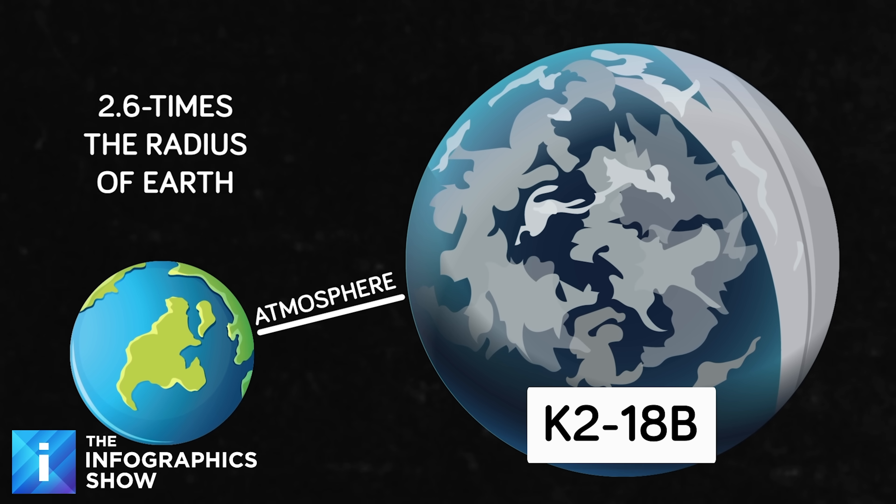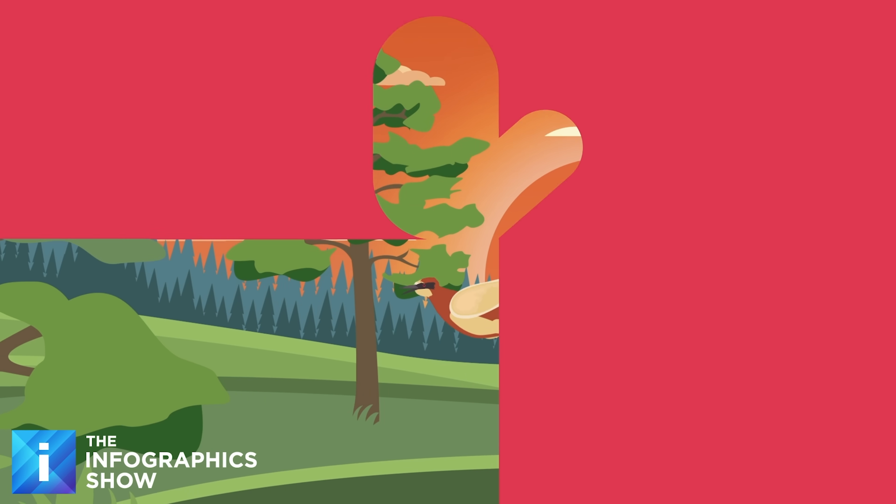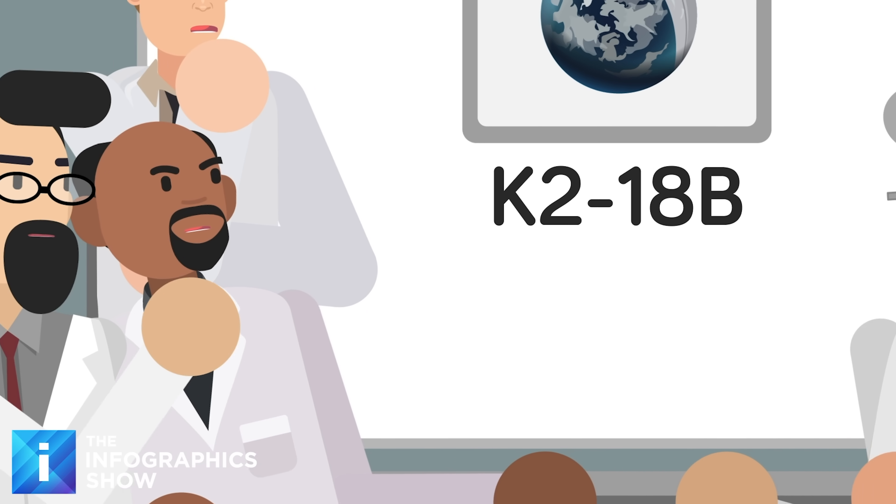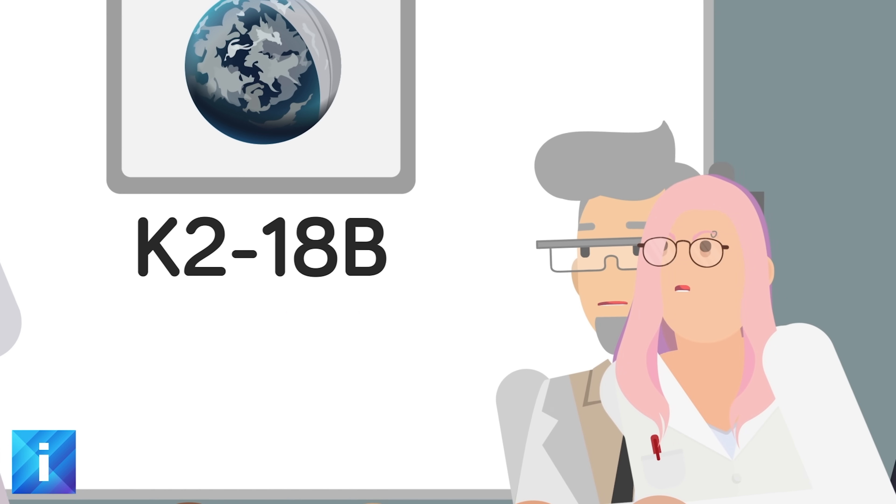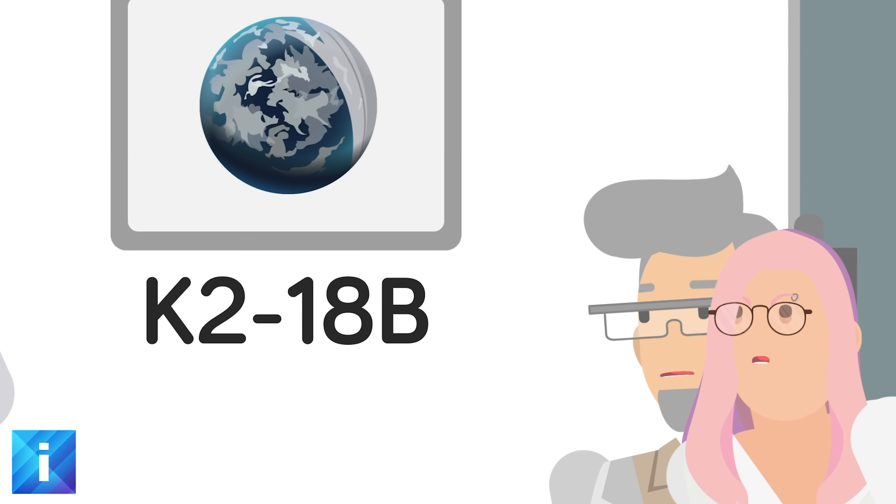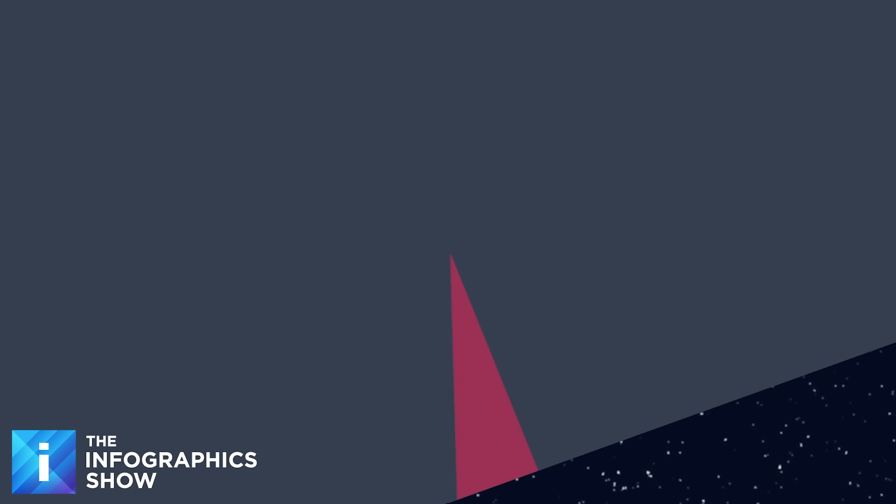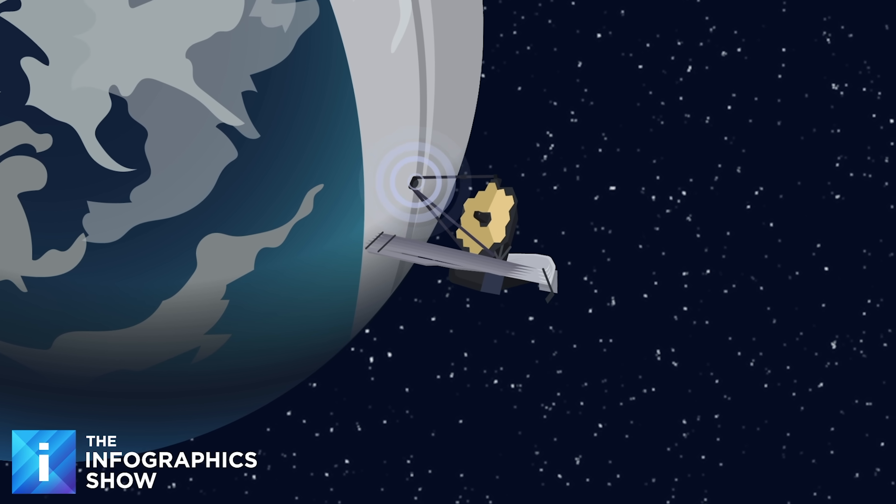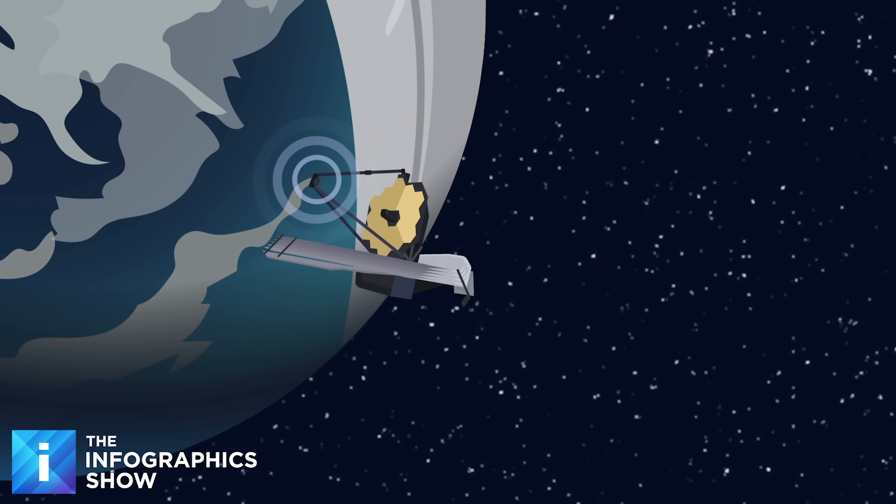And making it even more interesting, it has an atmosphere. And where there's an atmosphere, there is potential for life. Once an atmosphere was confirmed, K2-18b became a top priority for further study by the James Webb Space Telescope. In the years that followed, the telescope collected data revealing the planet's density, energy, falls somewhere between the Earth and Neptune, indicating that it was rich in hydrogen.